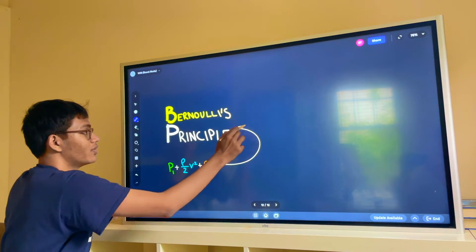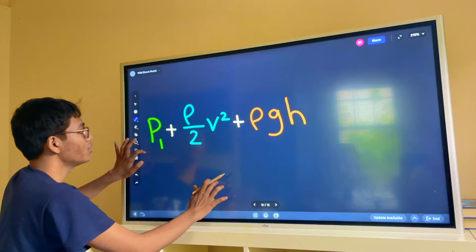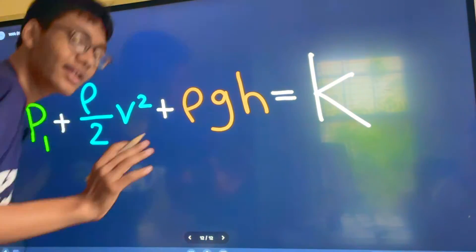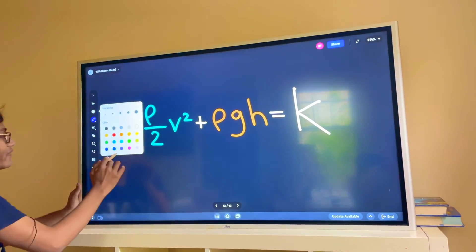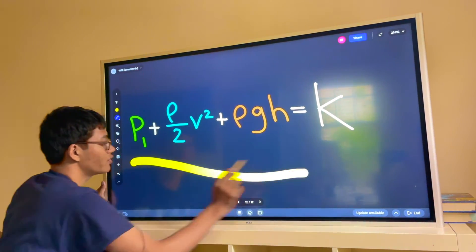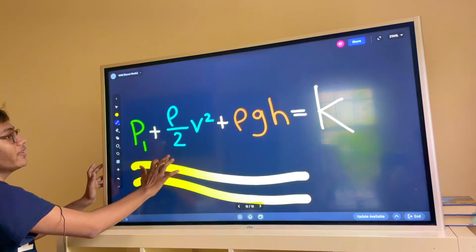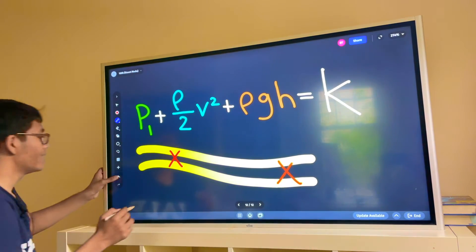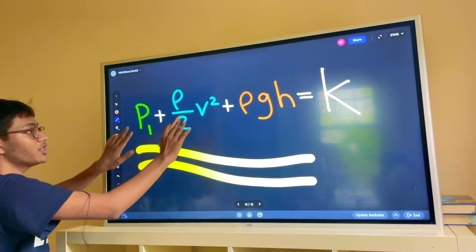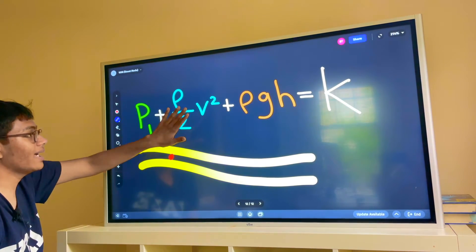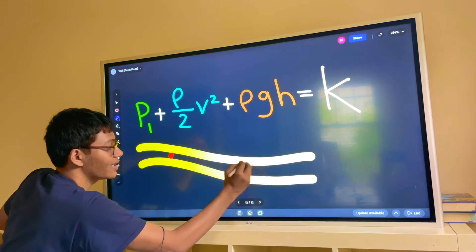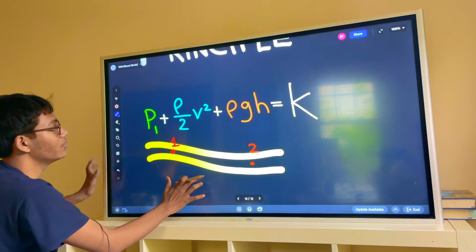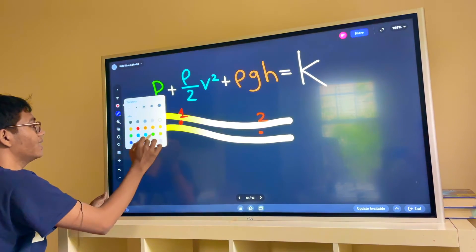This right here is Bernoulli's principle. This always adds up to a constant, so this over here is some constant k. That means if we have a fluid, if we have a streamline, so for example, if I have some kind of a streamline over here and I select two different points in this streamline, I'm going to select point one and point two. The sum of each of these three components—the static pressure, the dynamic pressure, and the hydrostatic pressure—is going to be constant at point one and point two, and so we can express Bernoulli's principle as such.